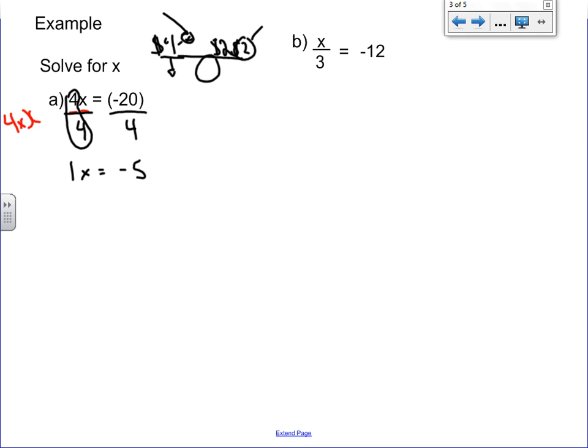Now, 1 times anything, we don't need to write that again. 1 times 1 is 1, 1 times 2 is 2, 1 times happy face is just happy face. So 1 times x is just going to be x. There we solved for x.